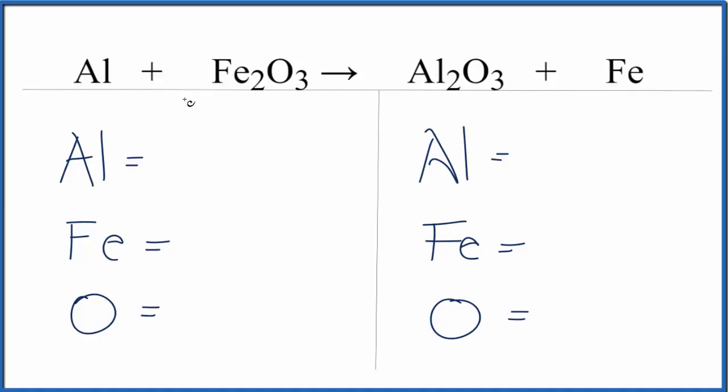So let's balance the equation. We'll count the atoms up on each side. We have one aluminum, two irons, and then three oxygens. Over on the product side, two aluminum, one iron, and then three oxygen.